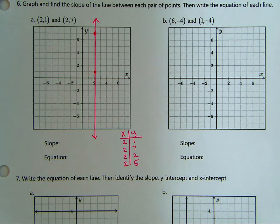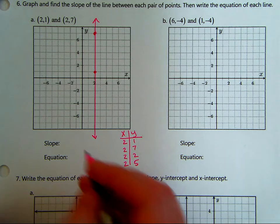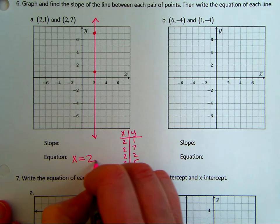And so the equation, let's skip this for a second, the equation is actually x equals 2. There's no y in it because the x value is always 2. The y value is not changing or varying. I'm sorry, the x value isn't. So the equation is x equals 2.